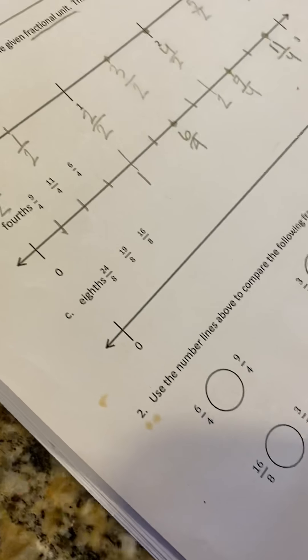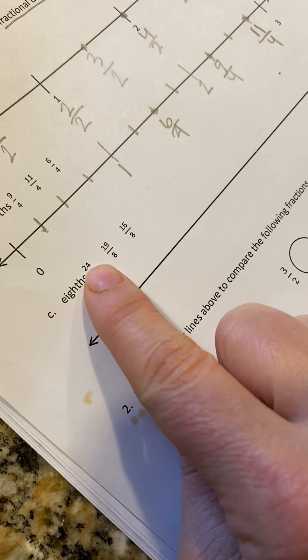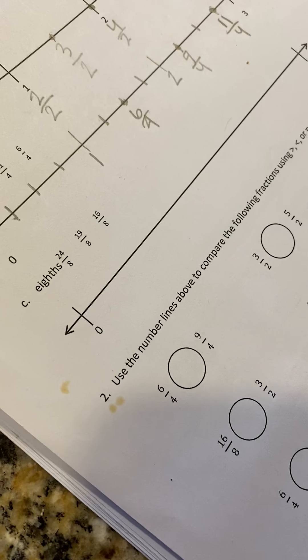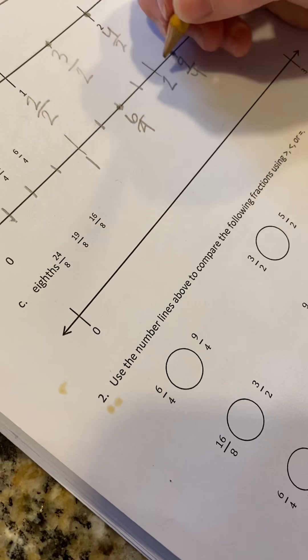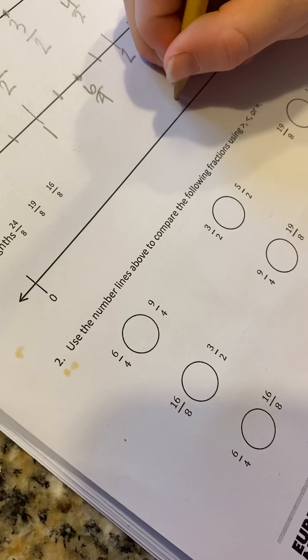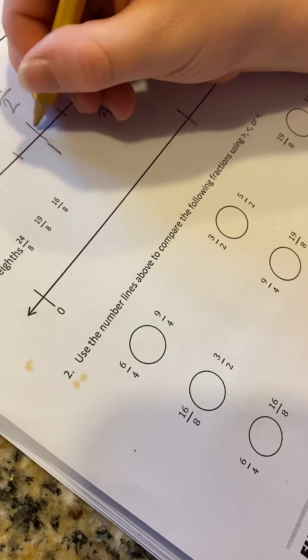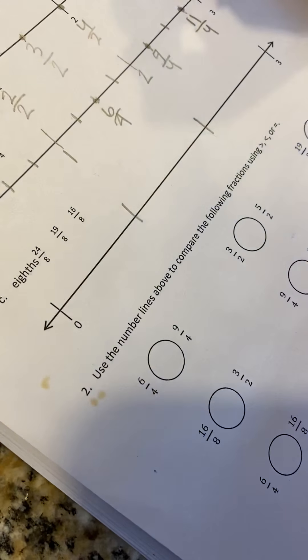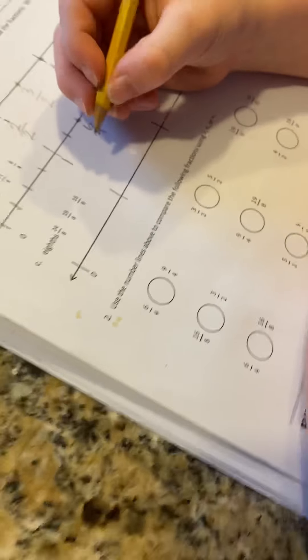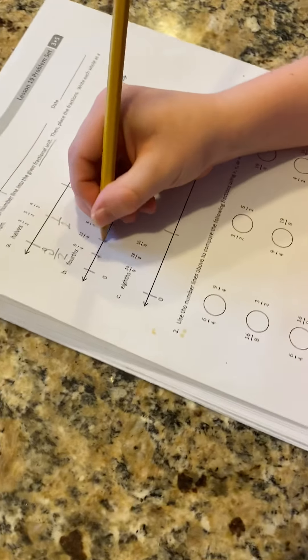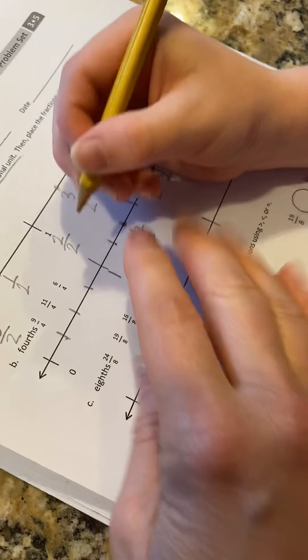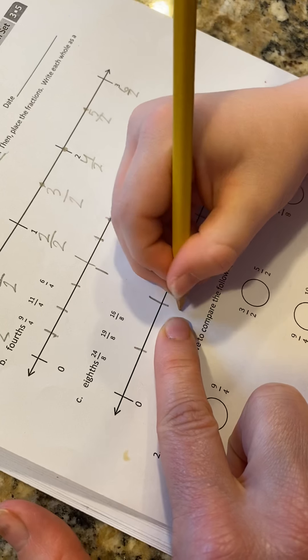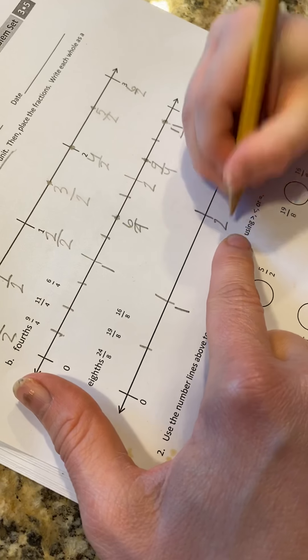Now you're going to notice this next one has very high numerators. And the reason that is is because our unit is now eighths, which means that there's going to be more equal parts between each whole number. So Mikey's going to start by labeling the whole units. The number line is between zero and three. So we have to start by labeling our whole units and then breaking up into equal size parts. Start by labeling your whole units first. Zero. One. Two. And three.